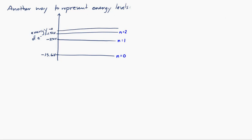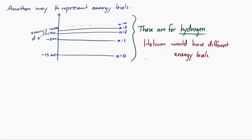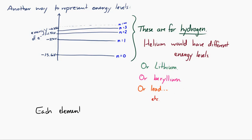I want you to keep in mind that the numbers I've written here are all for hydrogen — I've used hydrogen as an example. If I were to write these down for helium, which has two protons and two electrons, the numbers would be different. They would also be different for lithium, beryllium, lead, iron, or uranium. Every element has very unique energy levels possible for the electrons. They'd be completely different for every other element.